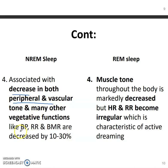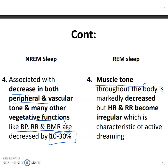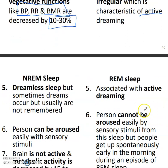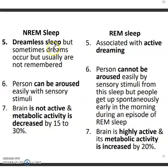Non-REM sleep is associated with decreases in peripheral vascular tone and other vegetative functions by 10 to 30 percent. In REM sleep, muscular tone is markedly decreased and heart rate and respiratory rate become irregular, which are characteristics of active dreaming.